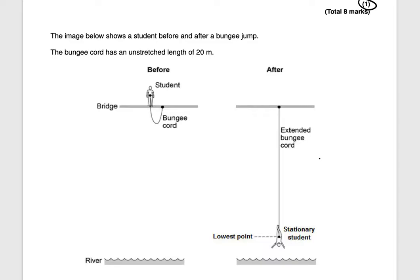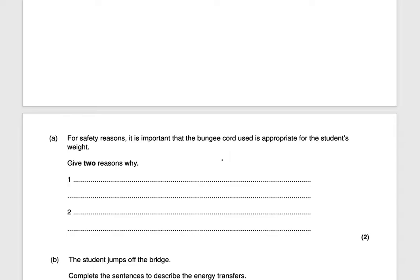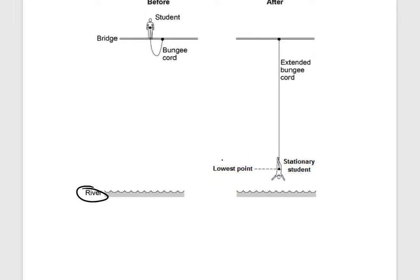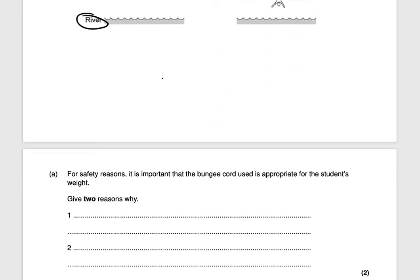The next question: the image shows a student before and after a bungee jump. The bungee cord has an unstretched length of 20 meters. The bridge is at the top, the student is attached to the bungee cord, and the river is at the bottom. The student falls just above the river, the bungee cord extends, and then the student is pulled back up. For safety reasons it is important that the bungee cord is appropriate for the student's weight — give two reasons why. If a person is too heavy, the bungee cord is going to snap — that's one reason.